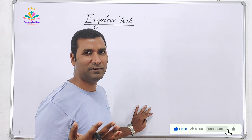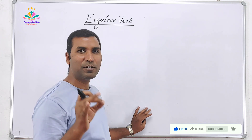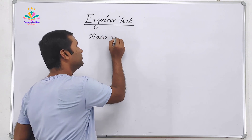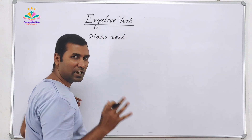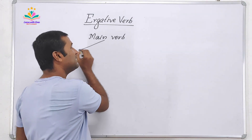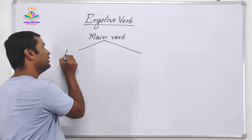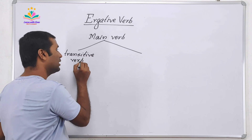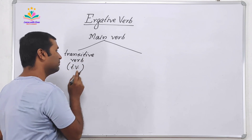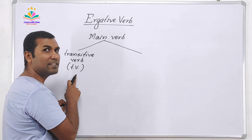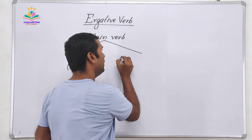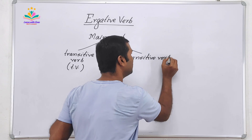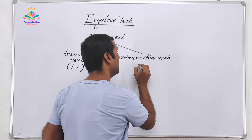I know you all know what is a main verb. When we talk about main verbs, on the basis of object, we can categorize them into two parts. One, we say transitive — transitive verb, in short TV. Another is intransitive — intransitive verb, in short IV.